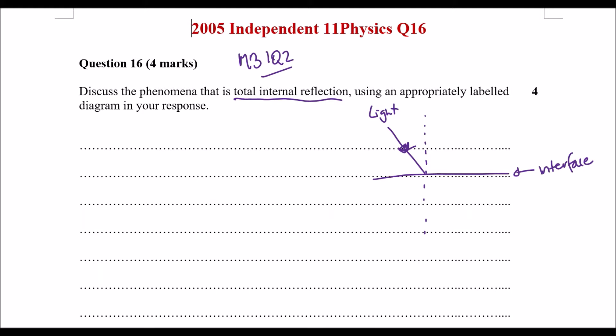In total internal reflection, instead of having the light go from a less dense medium to a more dense medium, we have a more dense medium to start off with, and the light will bend towards a less dense medium, in this case we're going to say air.